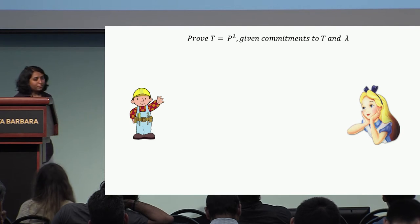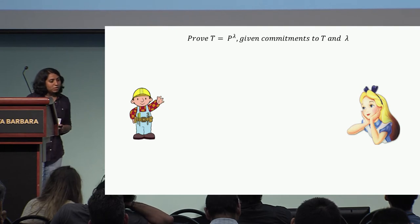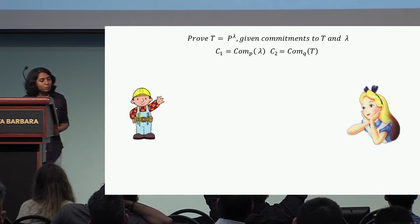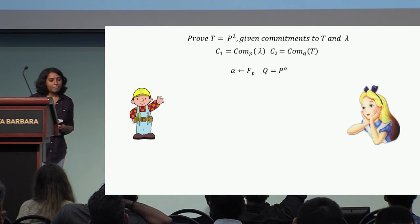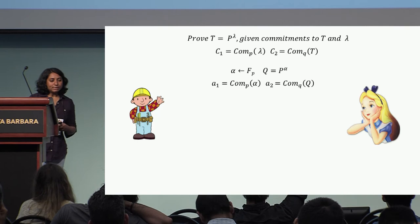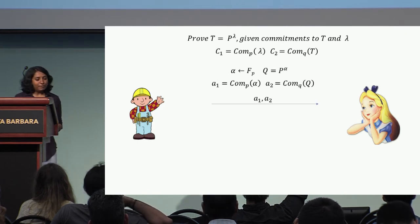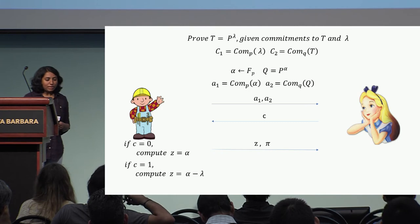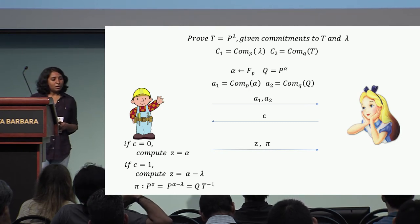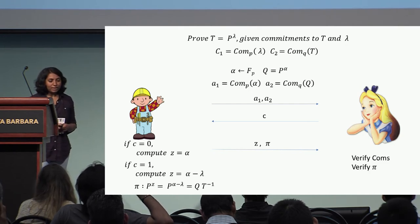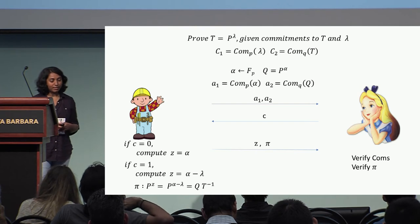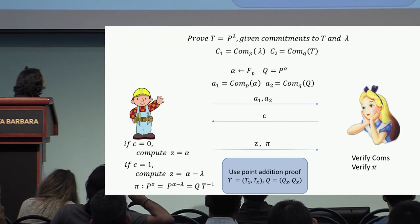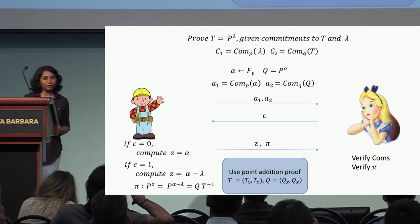We use the point addition proof to give a double discrete logarithm proof in elliptic curve groups. The goal is to prove T = P^lambda, given commitments to T and lambda. The prover chooses a random alpha from the field, computes Q = P^alpha, and sends commitments to both alpha and Q. The verifier chooses a challenge bit: if 0, the prover reveals alpha; if 1, the prover reveals the difference alpha - lambda along with a proof that P^z = Q · T^{-1}. The verifier checks commitments are well-formed and the proof is correct. The commitment to elliptic curve points T and Q is a commitment to their two coordinates, and the proof pi uses our point addition proof.